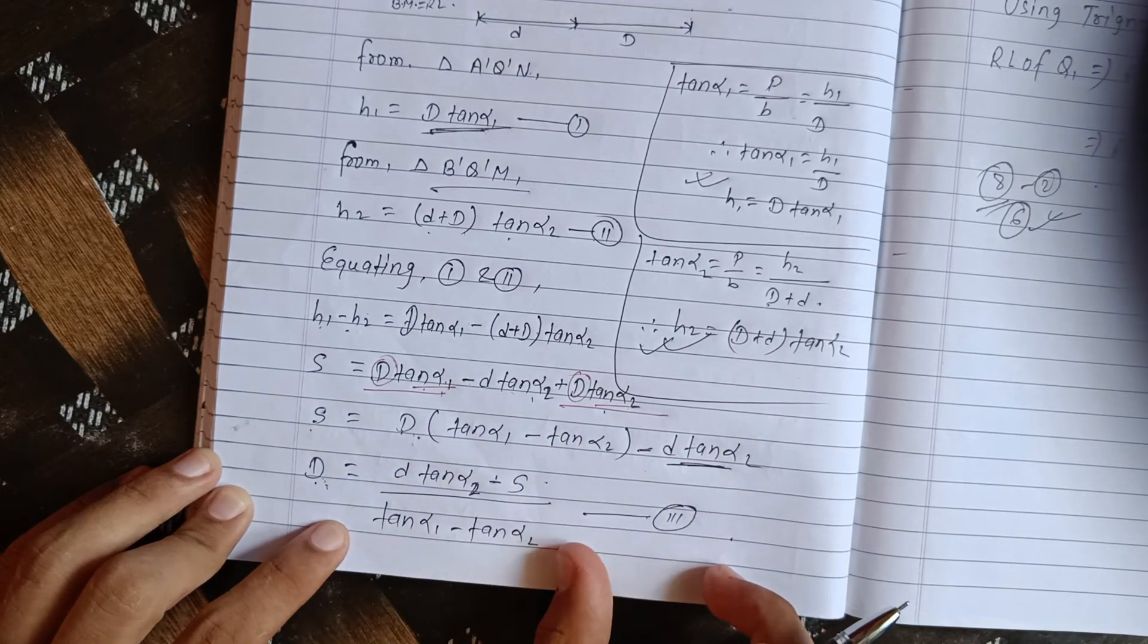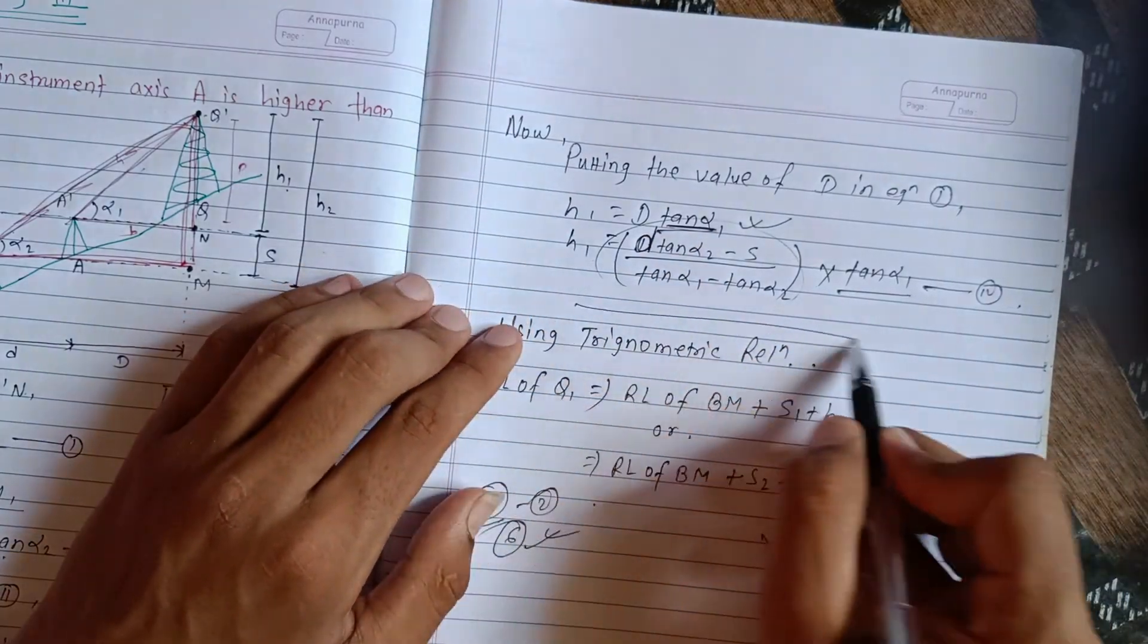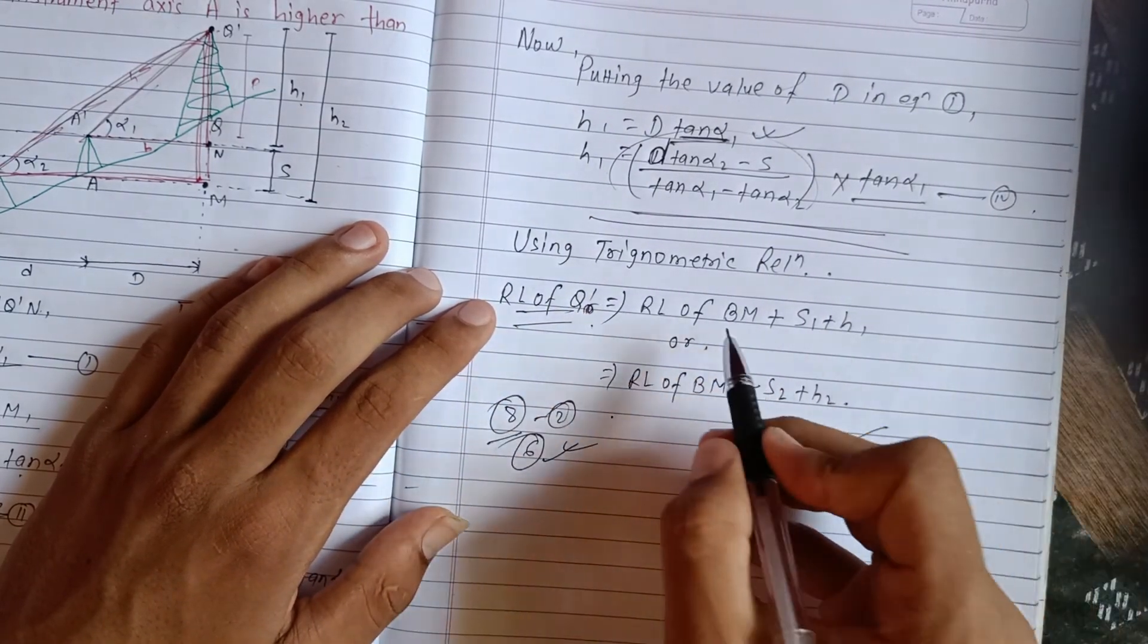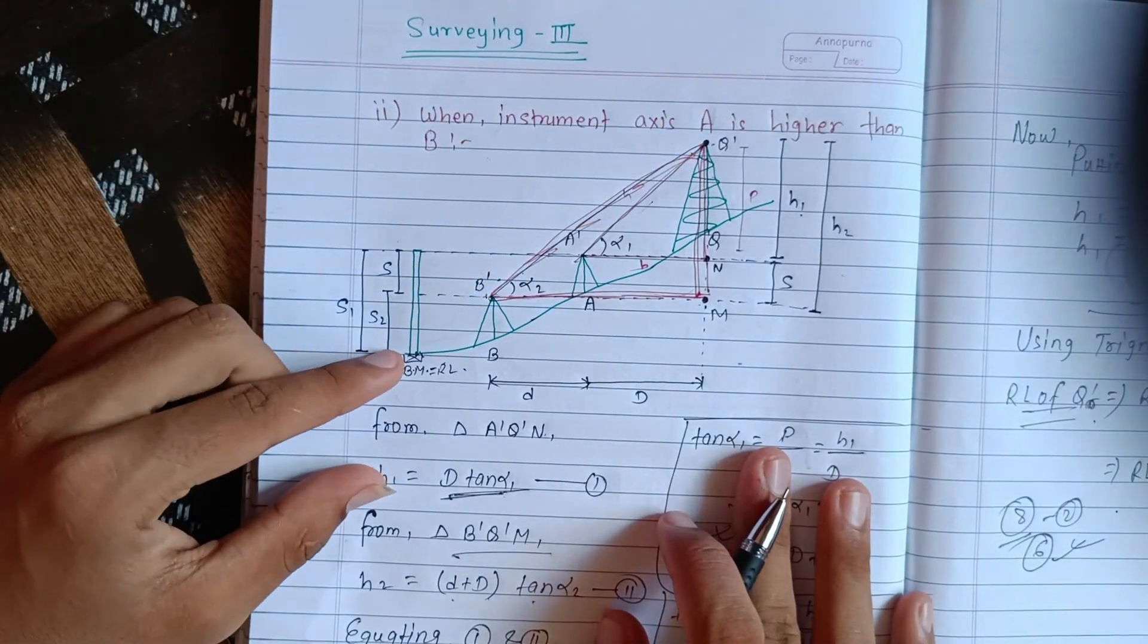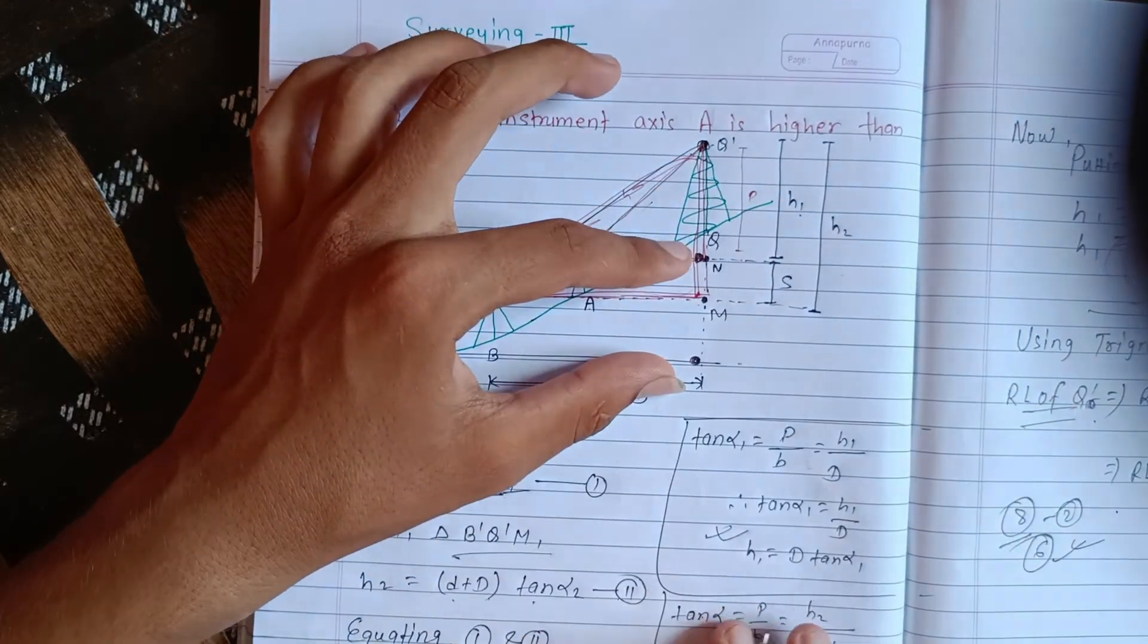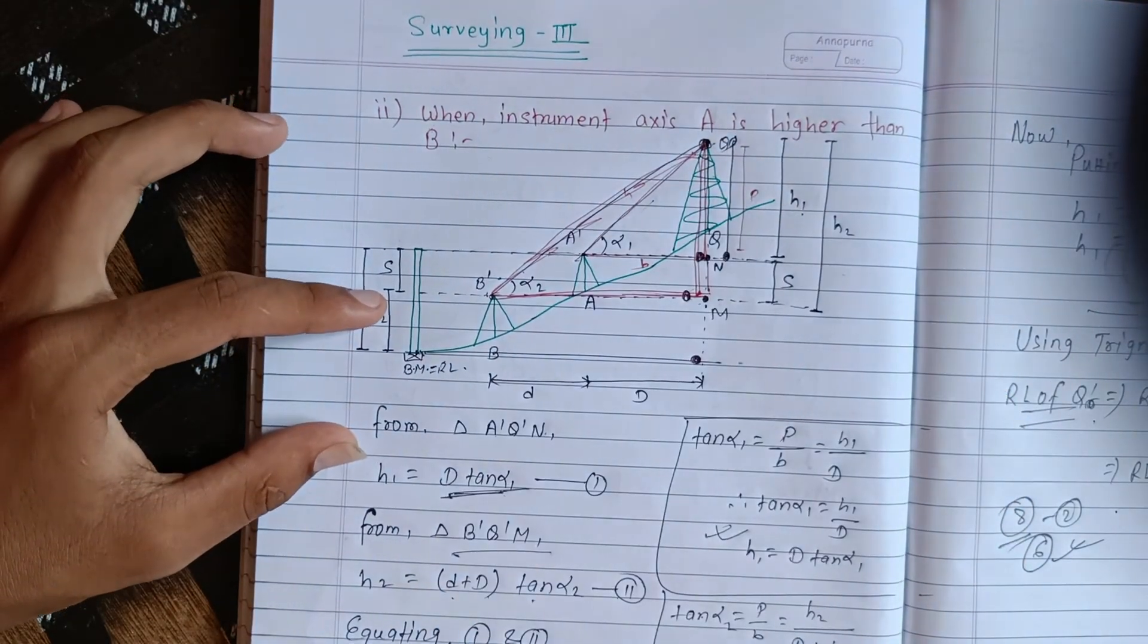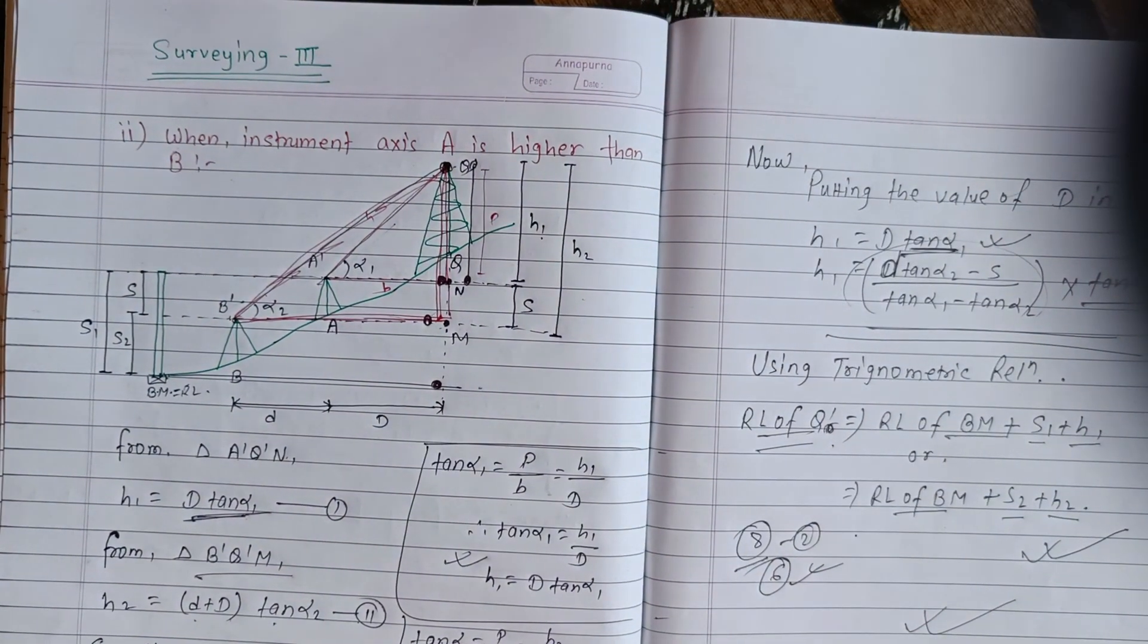Putting the value of D in equation one gives us the complete solution. Using trigonometric relations, the reduced level equals benchmark plus S1 or benchmark plus S2. This covers the answer process. Thanks for watching, goodbye and take care.